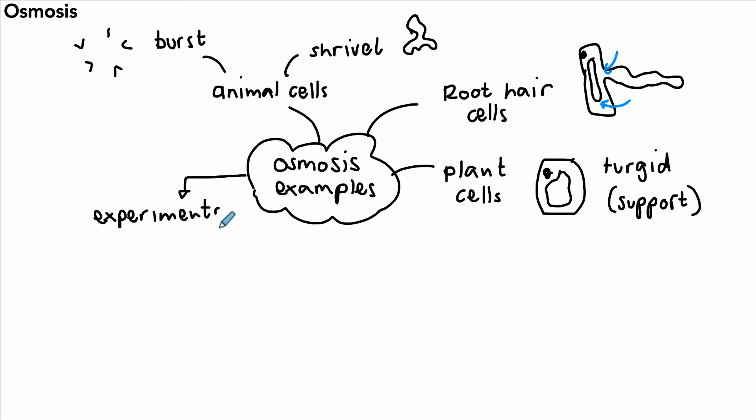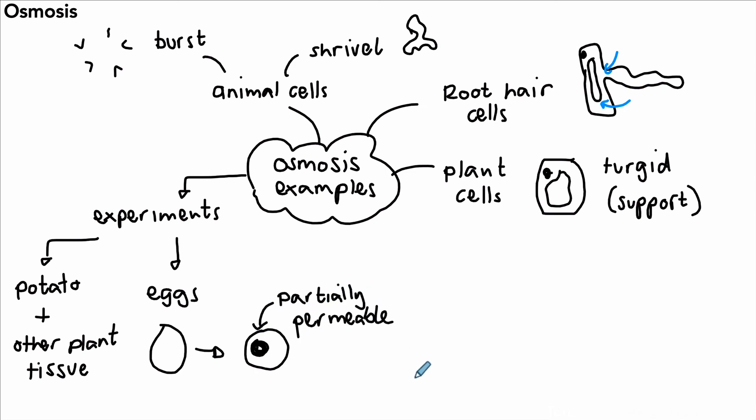Experiments with osmosis include experiments with potato, but it could be not just potato - could be other plant tissue as well, carrot, celery, whole range of other plant tissues. I've seen an experiment done with eggs where the outside of an egg, the shell, is dissolved with acid, leaving a membrane with the yolk inside it. That membrane is partially permeable and you could do a whole range of experiments with that scenario there. And we have other examples where we might use visking tubing to demonstrate osmosis, as we saw right at the beginning of the video.